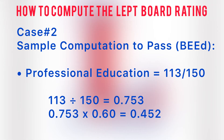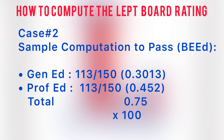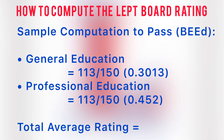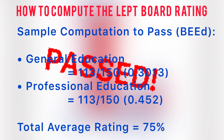Get the average by adding the computed rating in general education, which is 0.3013, and professional education, which is 0.452. Convert to percentage by multiplying 0.753 by 100. In this case, the BE ed taker's final rating is 75%. He or she passed.